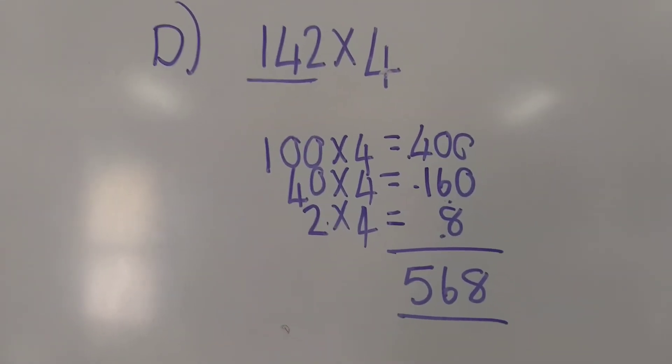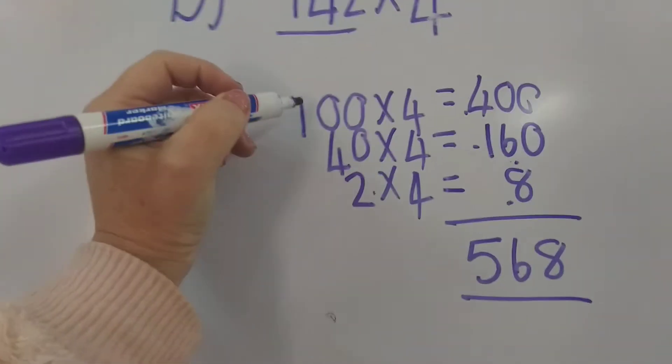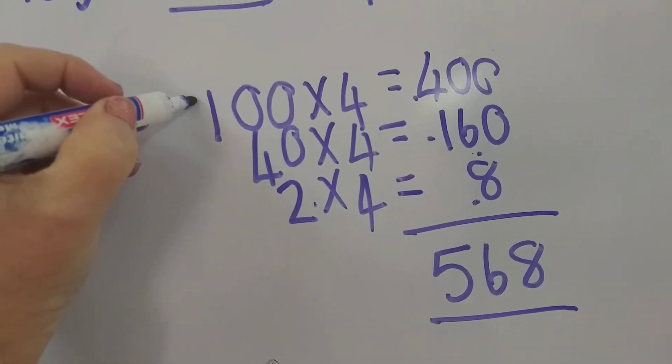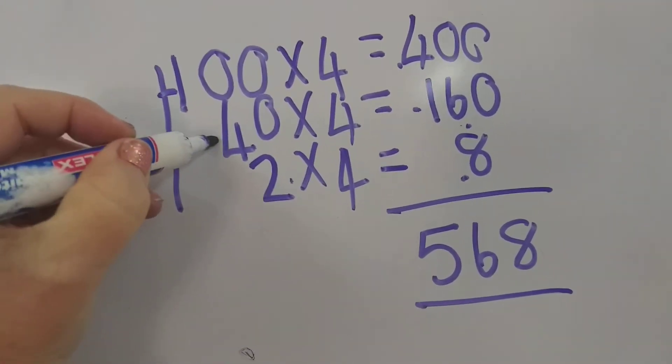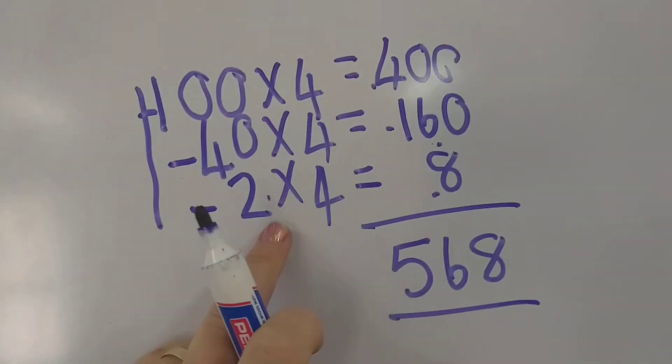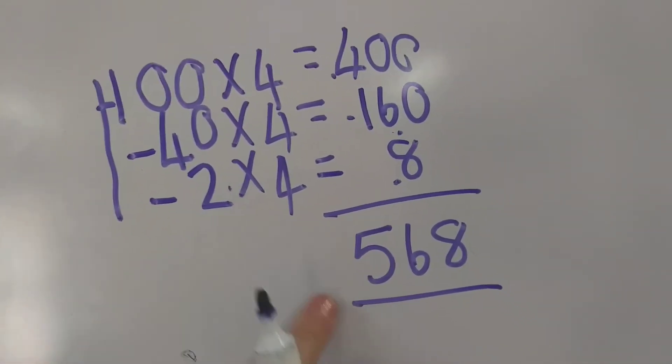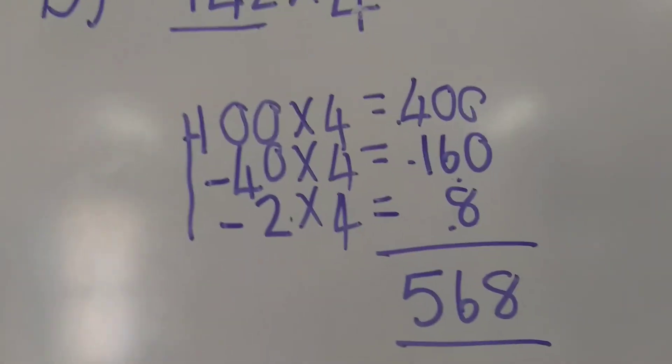So again, just break your number down this way. Put each number underneath each other, and then do your timesing. Let's try that last one, E.